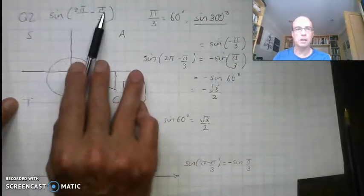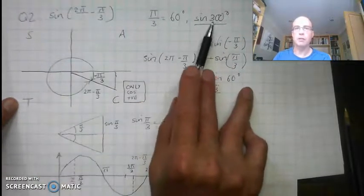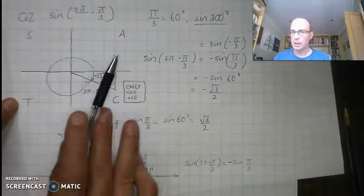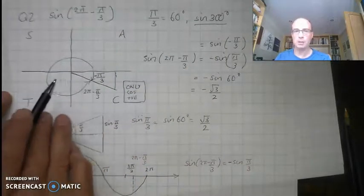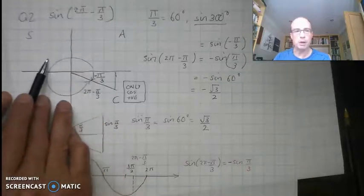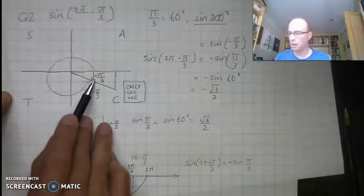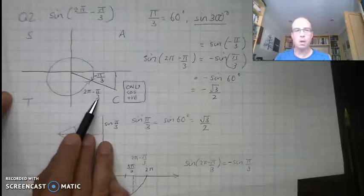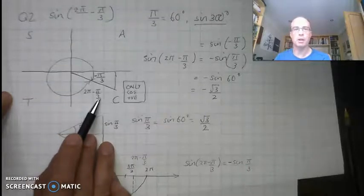So 360 take away 60, equivalent of sine of 300. We can either do it from the CAST diagram. If I measure my angle, if I go all the way around here, that's going to be my 2π minus π/3, so my 300 degrees.